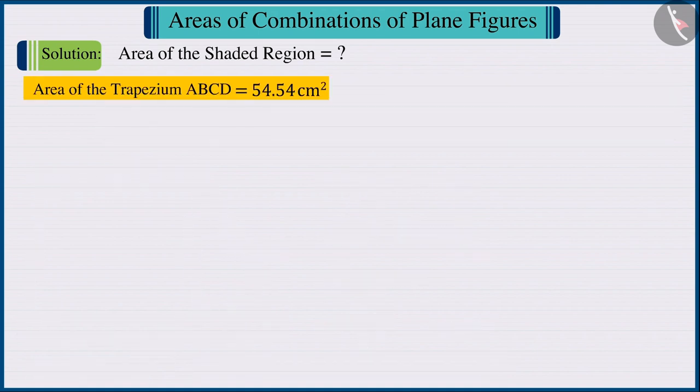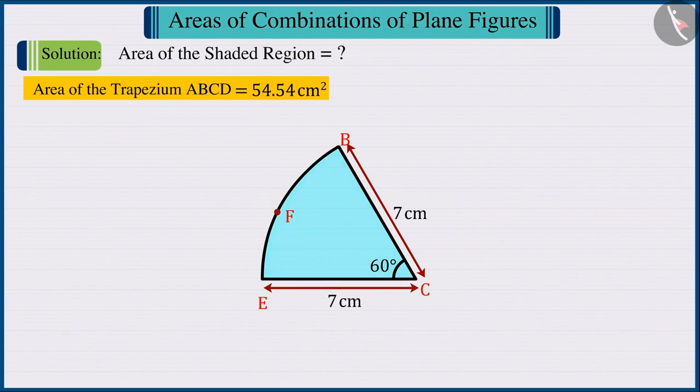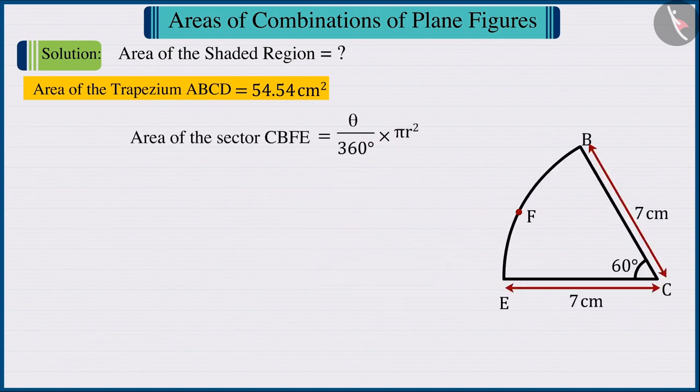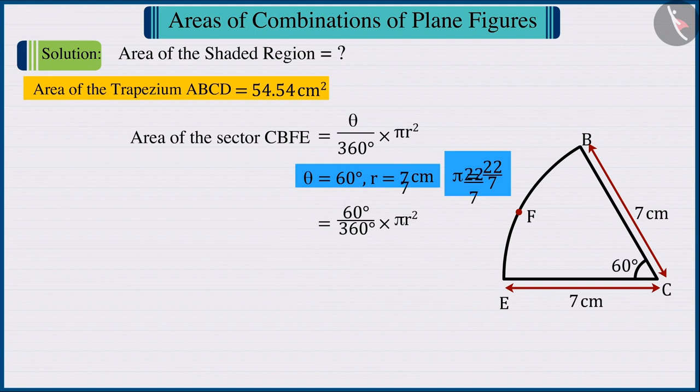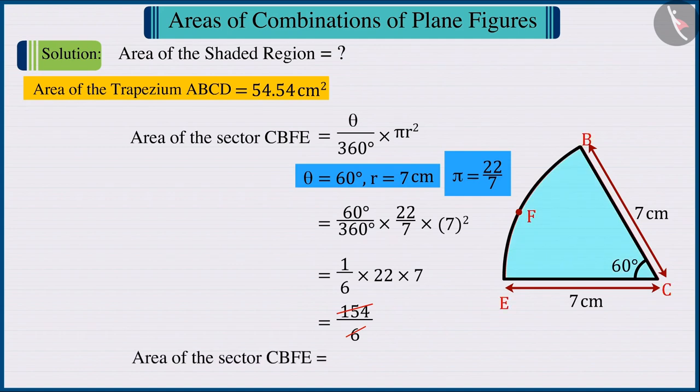Let's now focus on the sector CBFE. Substituting the value of theta as 60 degrees and the measure of radius as 7 cm in the formula for the area of a sector, we find the area of the sector CBFE as 25.67 cm².